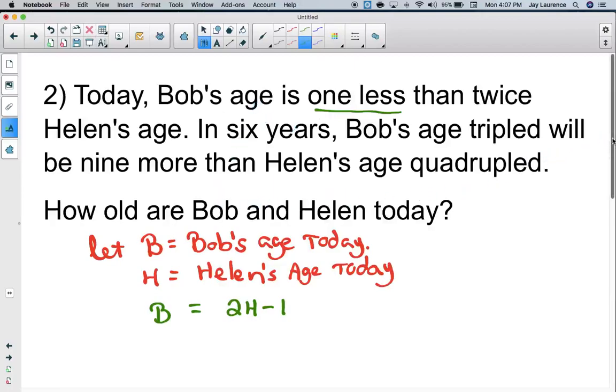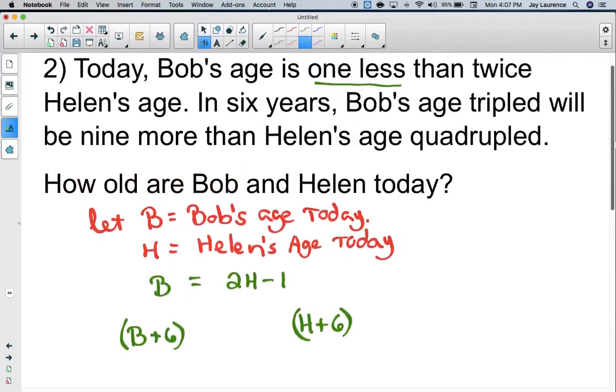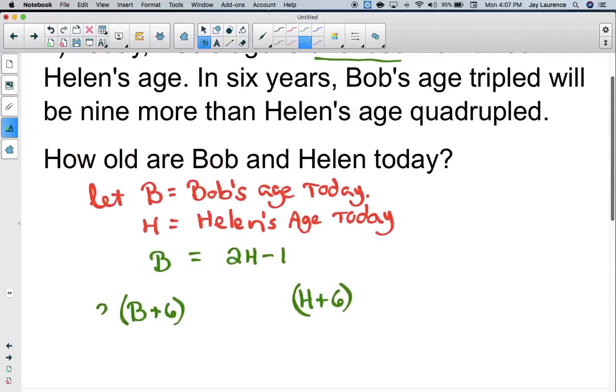In six years, Bob's age tripled will be nine more than Helen's age quadrupled. So I'm going to have (B + 6) times 3, that's Bob's age in six years tripled. I'm going to need Helen's age in six years times 4. This one is nine more than that one. So I can either subtract nine from here or add nine there. I'll subtract nine from there.